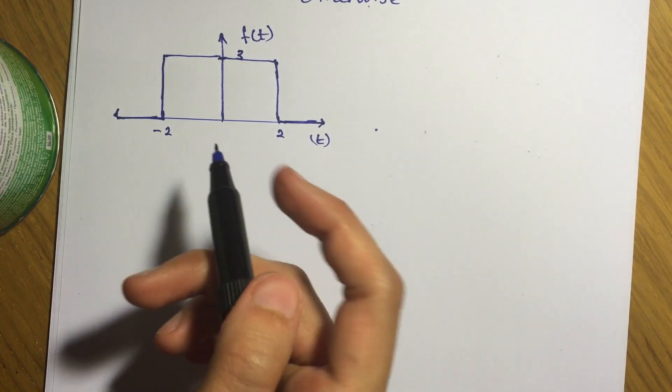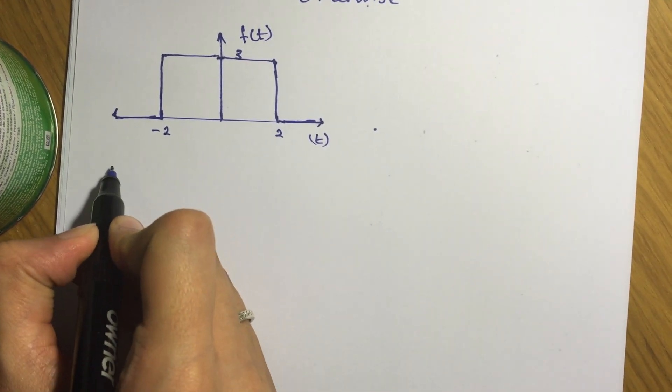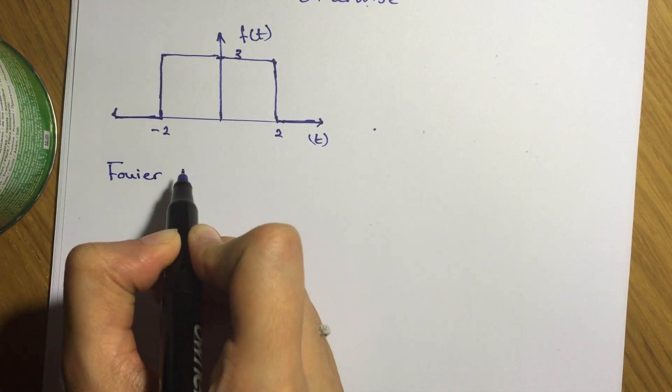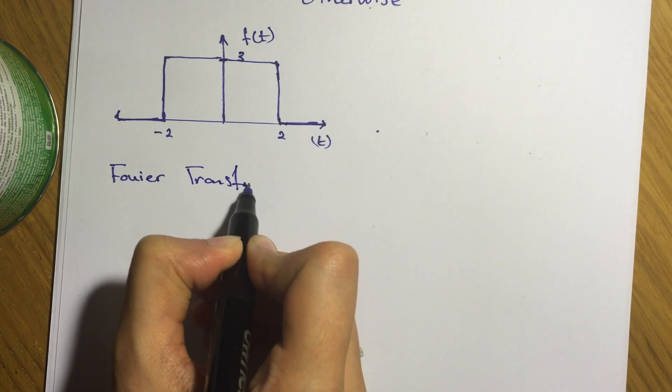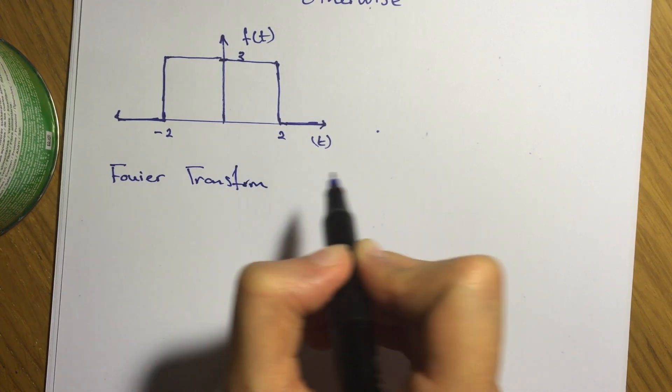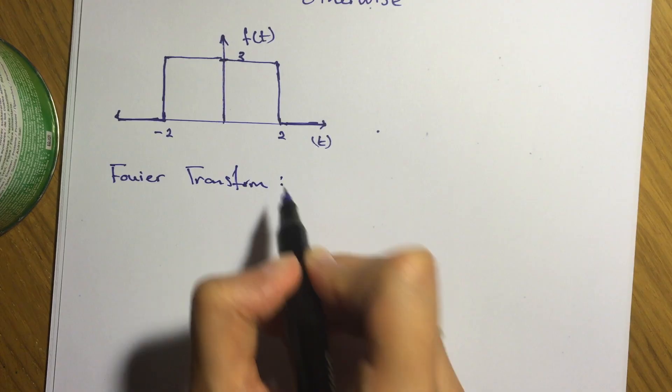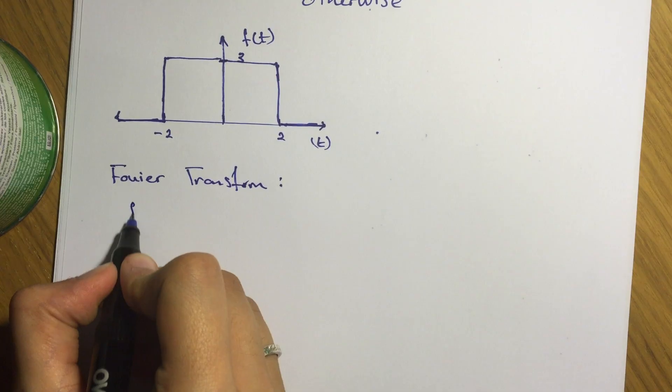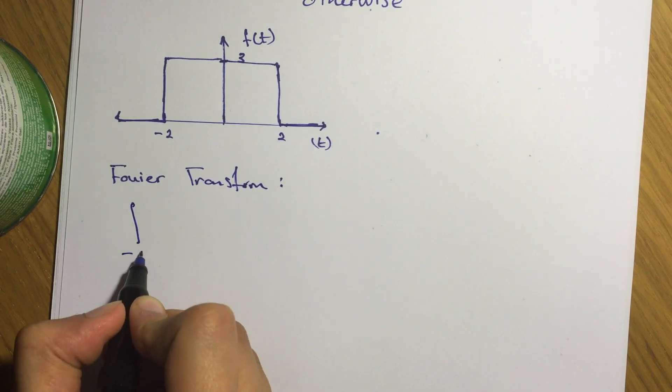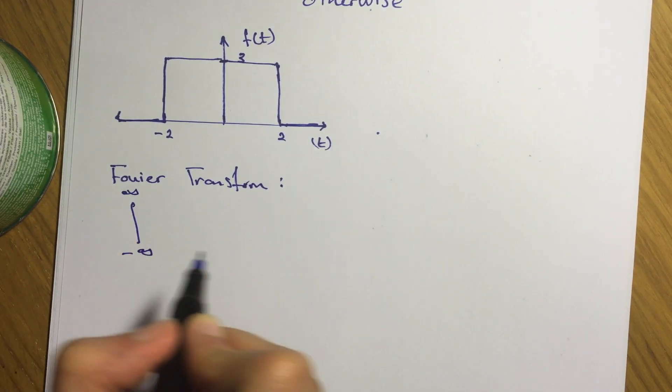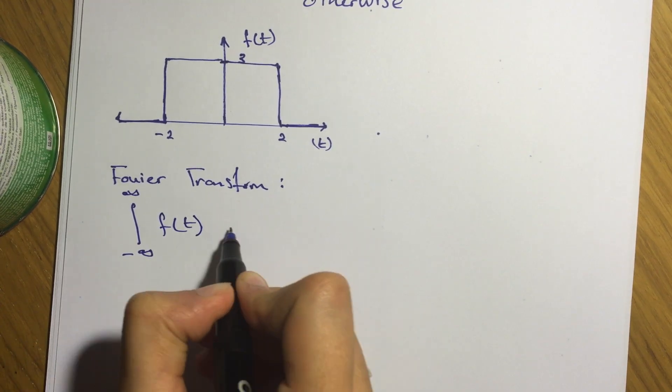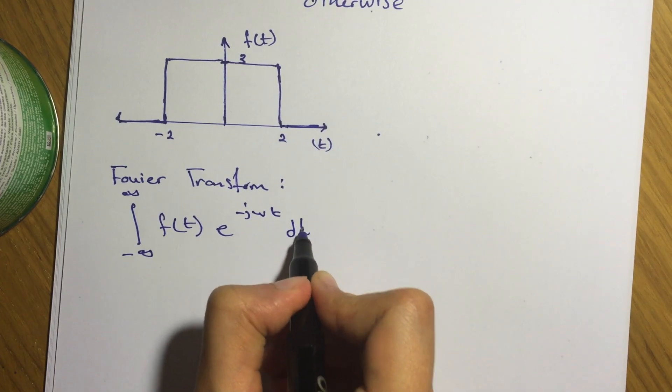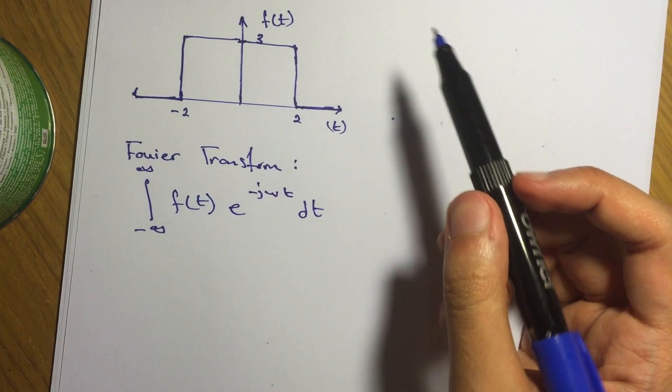Okay, how do we actually calculate its Fourier transform? First of all, we have to know the Fourier transform equation. So the Fourier transform equation is the integral from negative infinity to infinity of f of t times e to the negative j omega t dt.